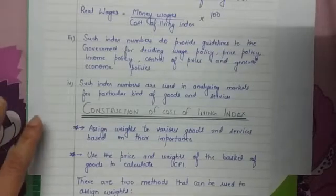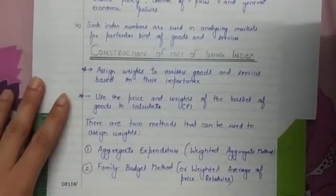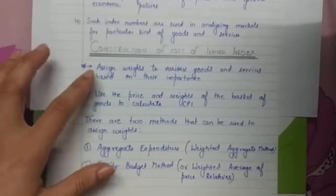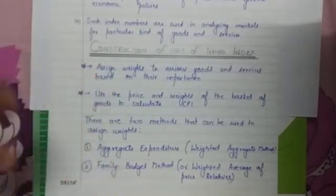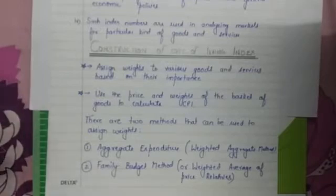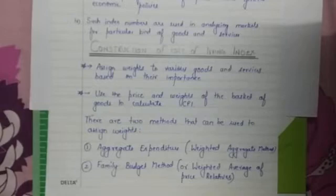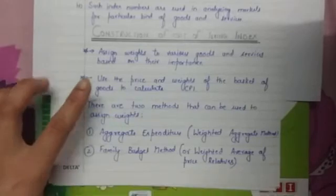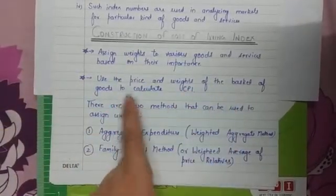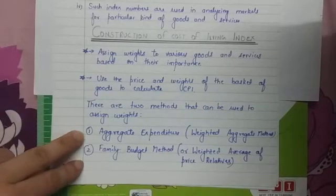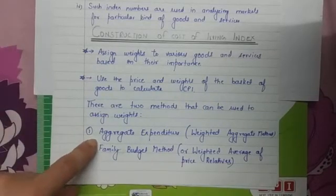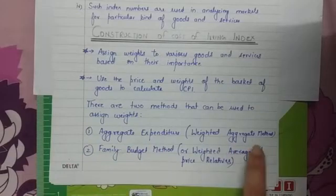These are the four reasons for which we calculate CPI. Now, how is CPI calculated? First, we assign weights to various goods and services based on their importance. Goods essential for survival have more weight, while goods fewer people buy or prefer have less weight. Using the prices and weights assigned to a basket of goods, we calculate the CPI using either of two methods: the first is the Aggregate Expenditure Method, also called the Weighted Aggregate Method.